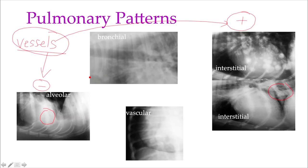Lung patterns are really helpful because if I have an alveolar disease like pneumonia and I treat it and it improves radiographically, it will become interstitial, then bronchial, and then normal lung — and the other way around.